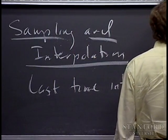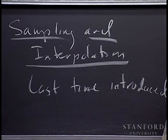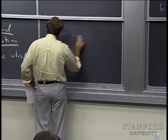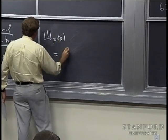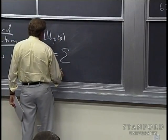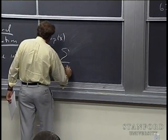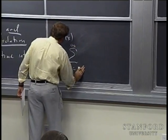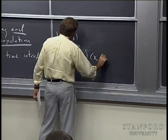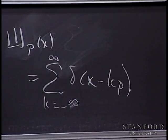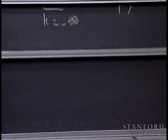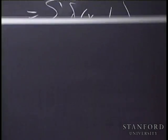We introduced the Shah function of spacing P: the sum from K equals minus infinity to infinity of delta(x minus K·P). So it's a sum of delta functions evenly spaced P apart, and it has several important properties that I will list.